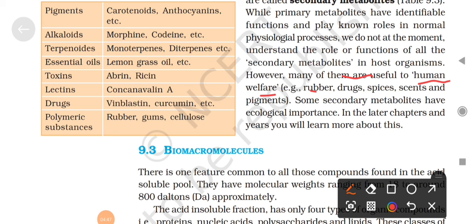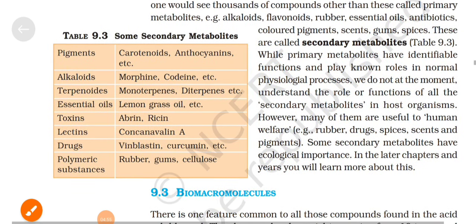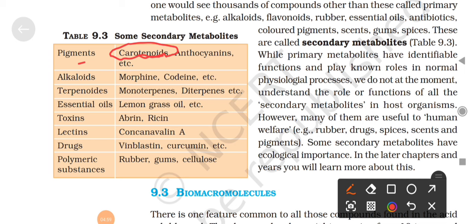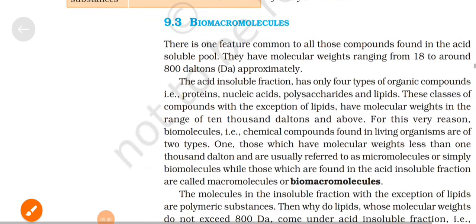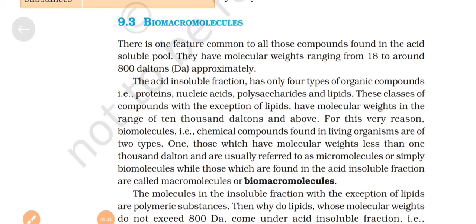What do we know about secondary metabolites? Rubber, drugs, spices, resins, pigments - these are examples. We know about carotenoids, anthocyanoids, alkaloids like morphine and codeine, terpenoids and essential oils like lemongrass oil, and toxins. In polymers: rubber, gums, and cellulose. All these are important to remember from this table. Some secondary metabolites also have ecological importance - that is also important in the environment. In later chapters you will learn about this in more detail.